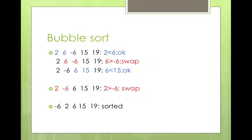In the second pass we start from the beginning again. We compare 2 and 6 — that's fine. Then 6 and -6 — we swap. Similarly, in each and every pass we compare adjacent elements until we get a sorted array. Finally we get all elements in sorted order.